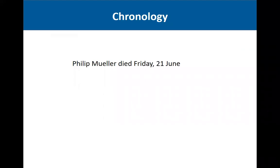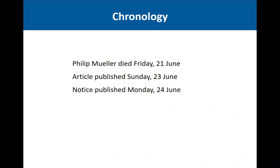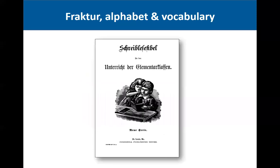Let's look at the chronology here. Philip Mueller died on Friday the 21st of June. The article we just looked at was published on Sunday the 23rd of June. And the paid death notice was not published until Monday the 24th of June. That's why you need to start at the day of death and work forward — because if there was an obituary or article, it might show up before the actual paid death notice.